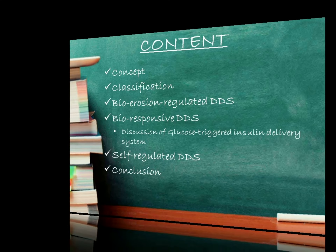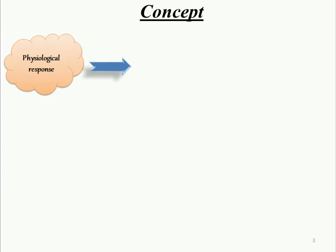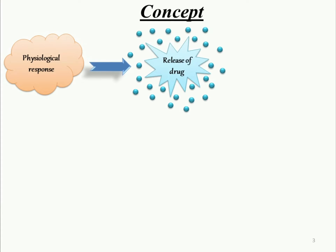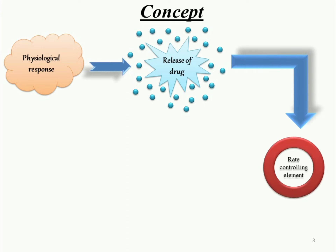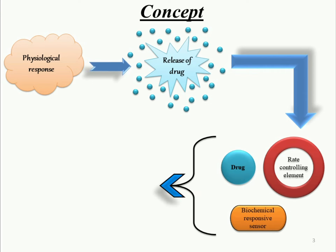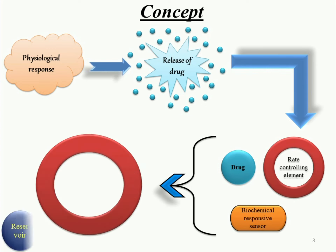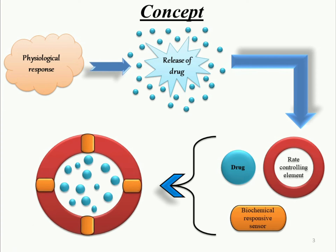So let's come to the concept first. The concept says that a physiological response mainly triggers the delivery system and then the drug is released from the particular delivery system. This delivery system consists of a rate controlling element under which the drug is placed, and it is composed of a biochemical responsive sensor also. This sensor and rate controlling element accumulate to generate the delivery system, where the rate controlling element contains the drug reservoir, and over this rate controlling element the biochemical responsive sensor is placed. When the physiological response triggers the biochemical responsive sensor, then the drug is released from the core to the outside of the delivery system.